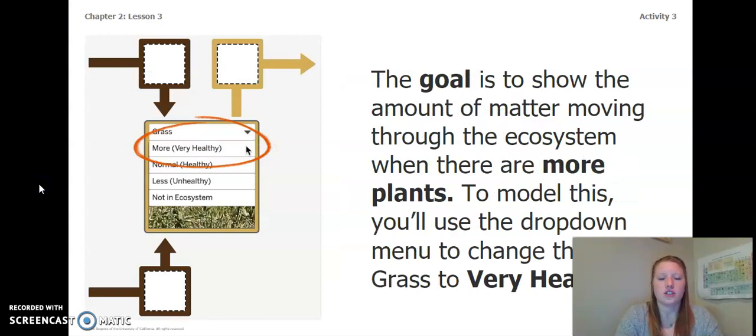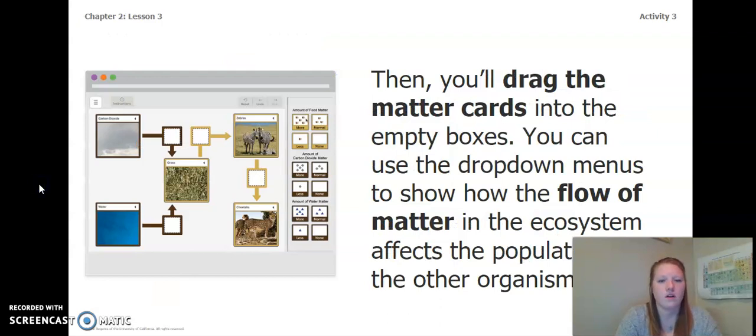The goal is to show the amount of matter moving through the ecosystem when there are more plants. To model this, you'll use the drop-down menu to change the grass to very healthy. Then you'll drag the matter cards into the empty boxes. You can use the drop-down menus to show how the flow of matter in the ecosystem affects the populations of the other organisms.